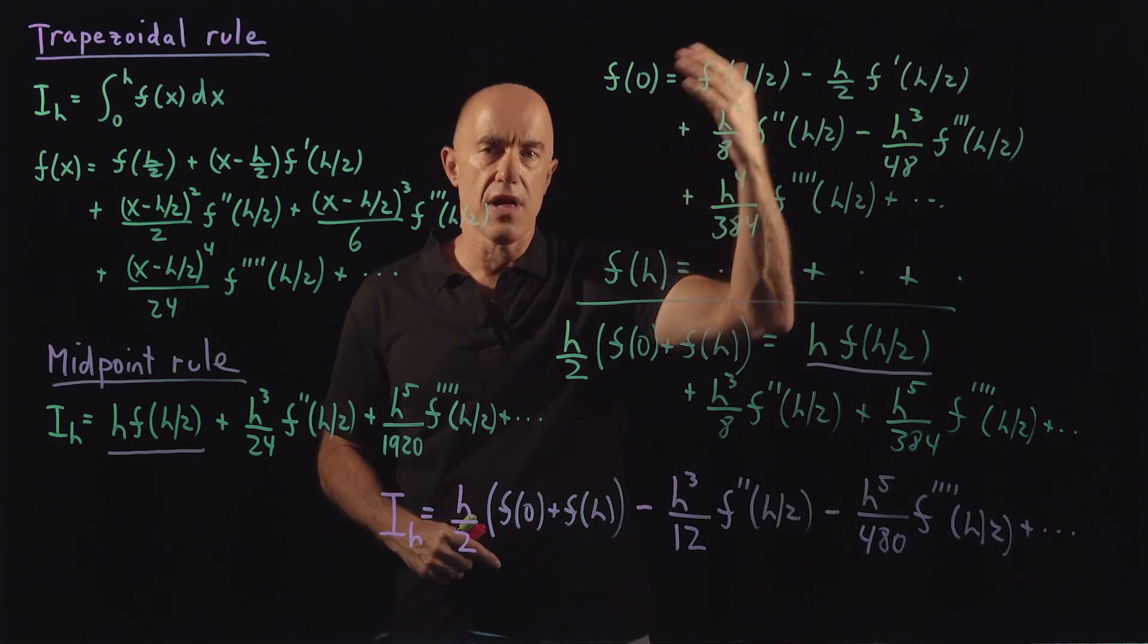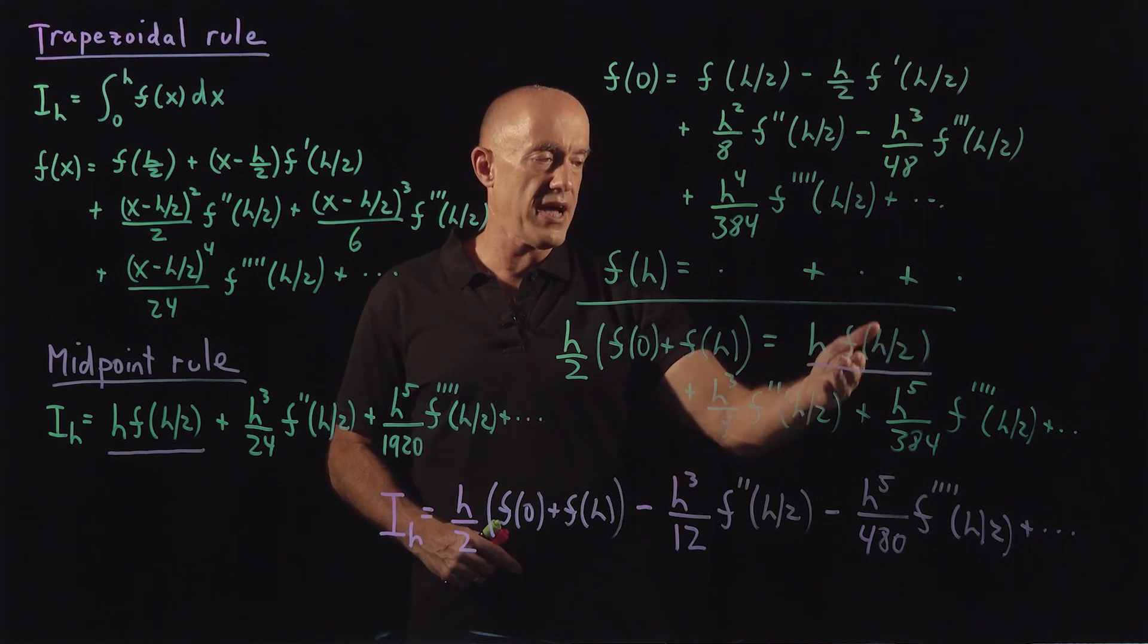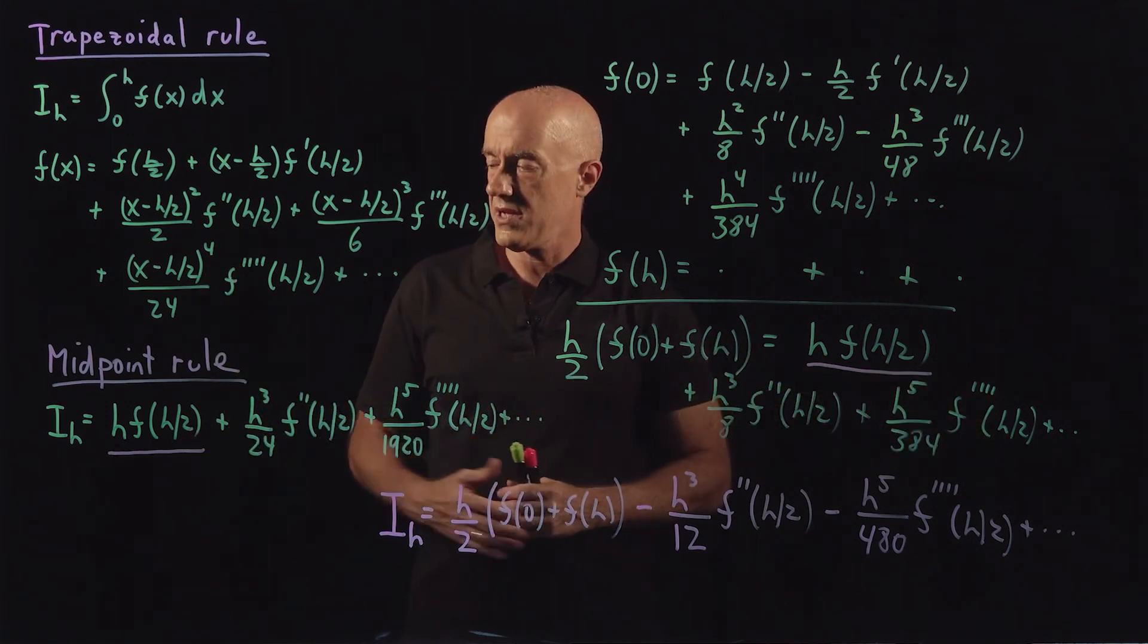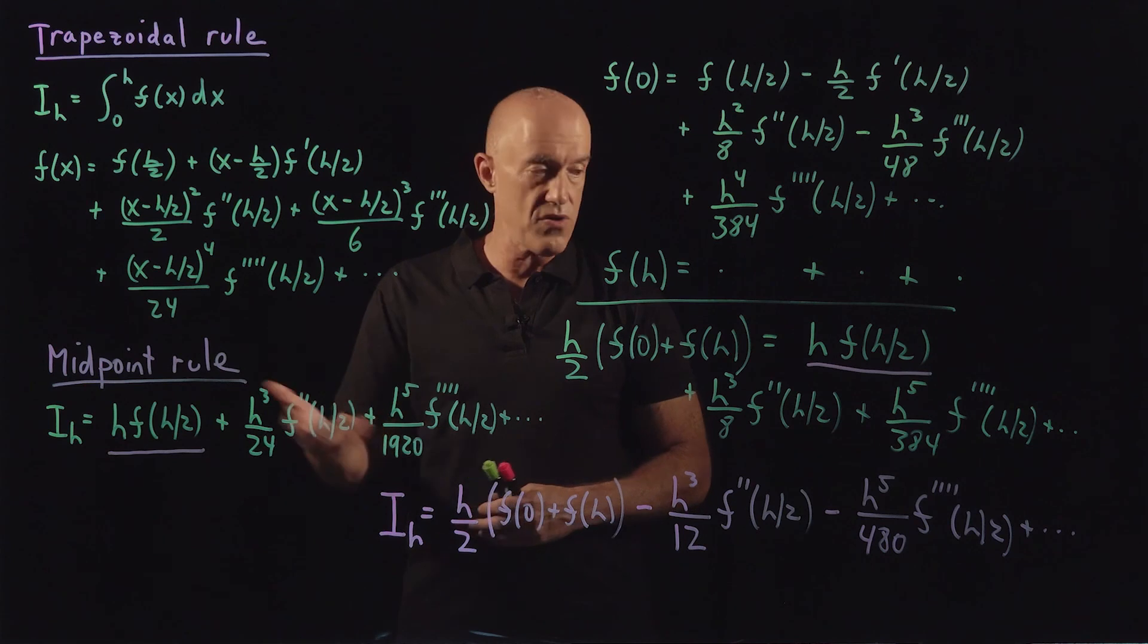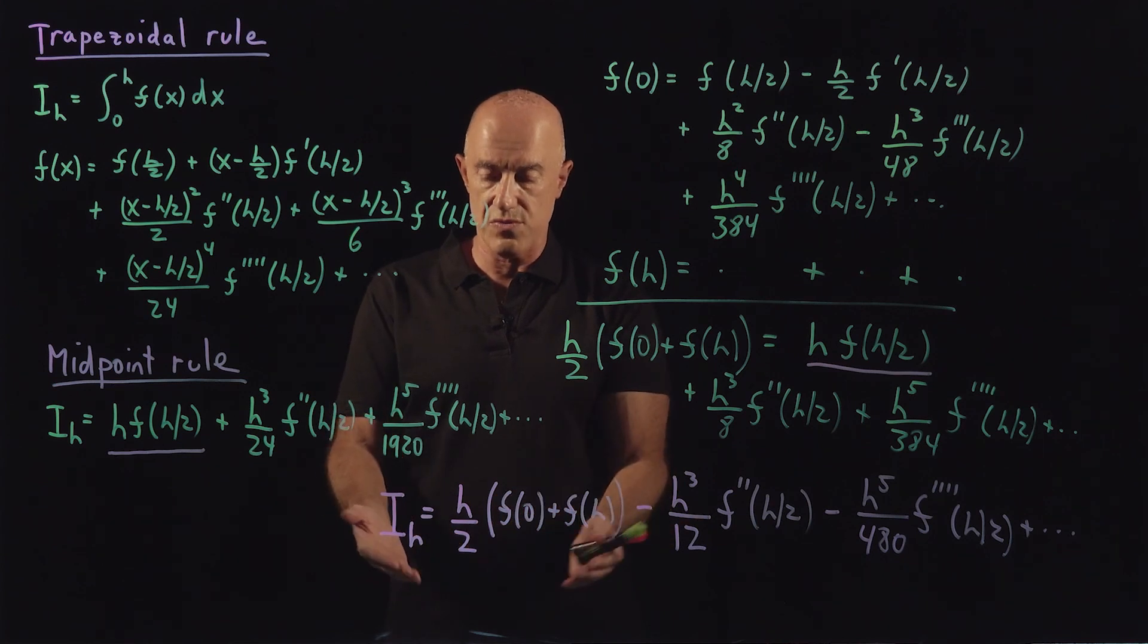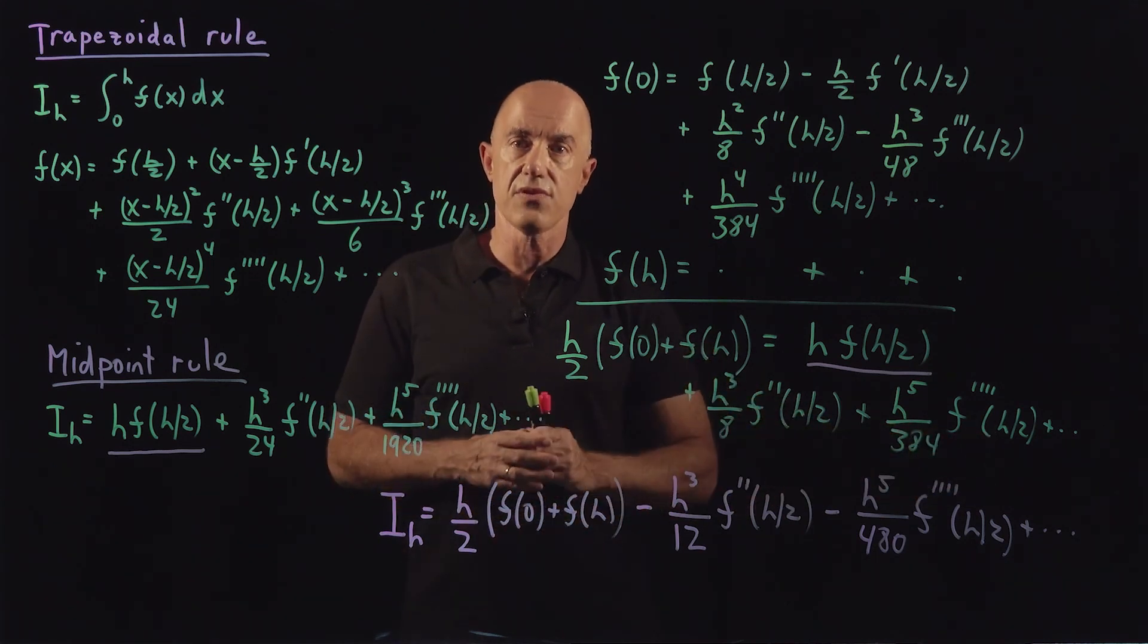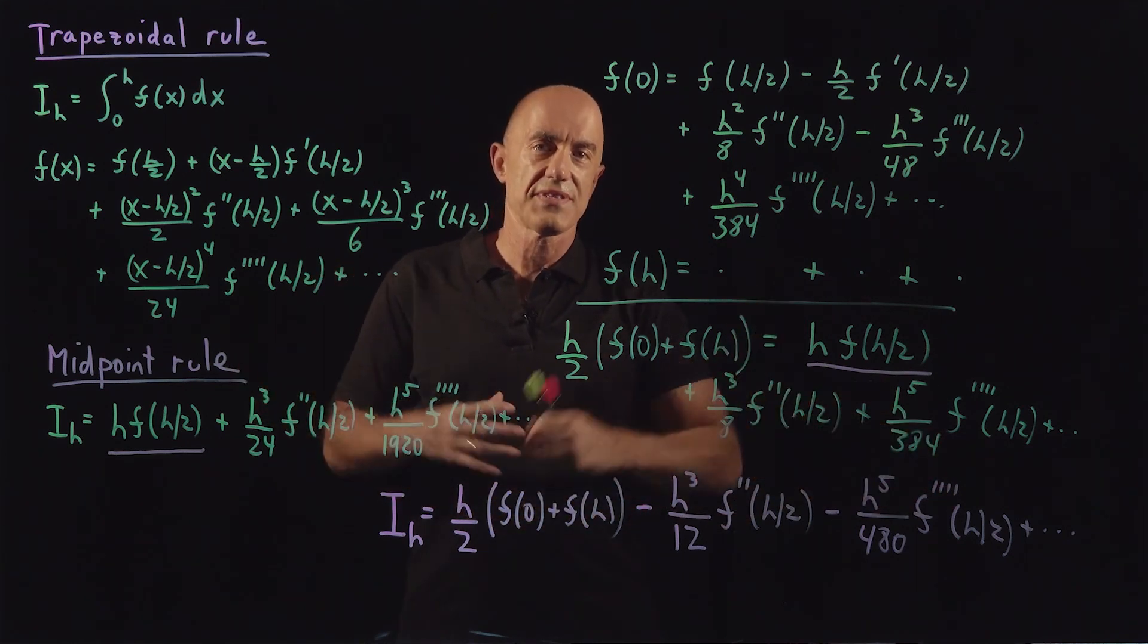We can add them, multiply by h and divide by 2. Then the leading order term will be h times f of h over 2, which is exactly the midpoint rule. And then we have the two error terms. Then we can use the midpoint rule to substitute in the integral, i sub h, and the error terms. Solve for i sub h, and we end up with the trapezoidal rule. So i sub h is h over 2 times f(0) plus f(h). And then we have a handle on the two error terms, which we will need in the next video when we derive Simpson's rule.